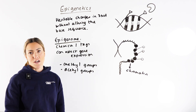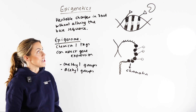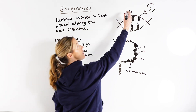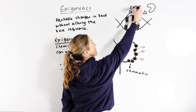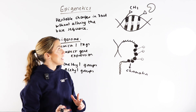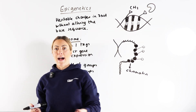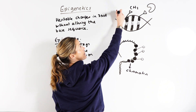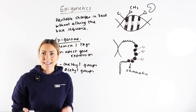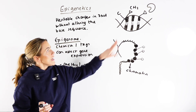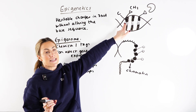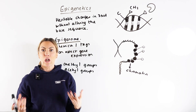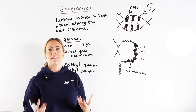Let's think about methyl groups first and how they can affect gene expression. Here we've got a section of DNA, and the little triangles here are the methyl groups. If we add methyl groups to the DNA — and in fact, these methyl groups bind specifically to cytosine bases in the DNA — if we add methyl groups to those cytosine bases, then the methyl groups are physically blocking the DNA, they are physically blocking the gene.